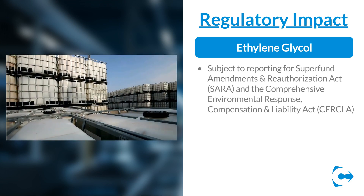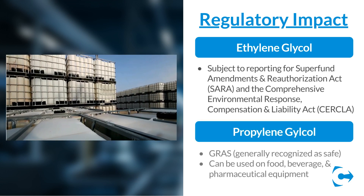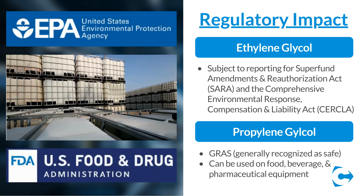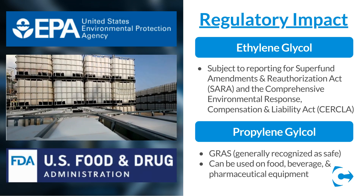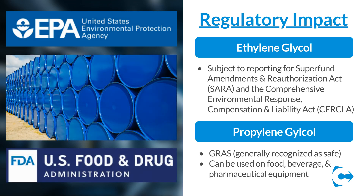In terms of regulatory impact, neither ethylene nor propylene glycol occur on the EPA list of hazardous substances. However, Dowtherm, the ethylene glycol-based option, is subject to reporting requirements, while PG is considered GRAS — generally recognized as safe.